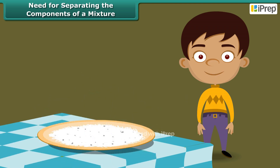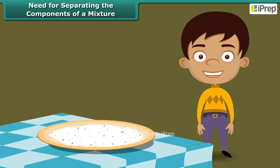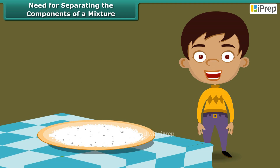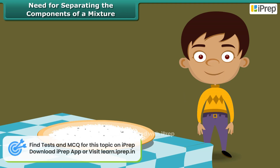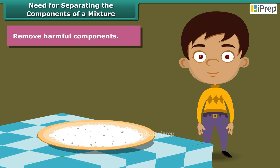Similarly, we find stones, mites, etc. in rice, wheat, pulses, etc. We remove them before cooking because they are harmful to our body. So, the second reason for separation is removal of harmful components.